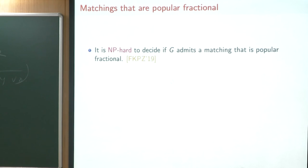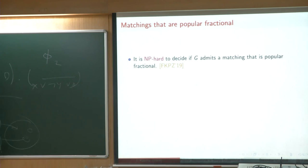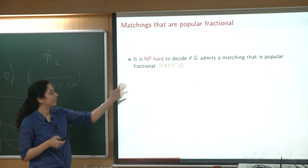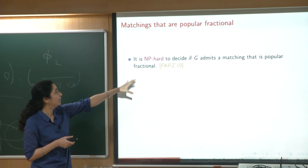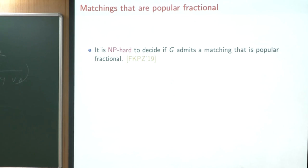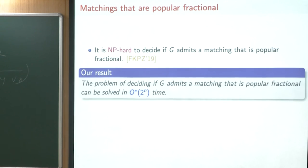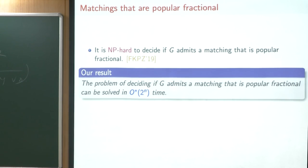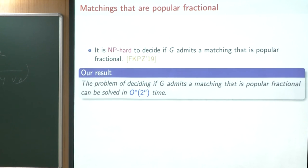There is one more result in this paper. One may ask: instead of popular matchings, if we restrict attention to integral matchings that are also popular fractional — a strict subset of popular matchings — is that a tractable class? Our NP-hardness proof earlier this year shows that even that subclass is NP-hard. However, our machinery enables a truly fast exponential time algorithm for this subclass: rather than k^n, I am able to show a bound of O*(2^n) time for testing if G admits an integral matching that is also popular fractional.